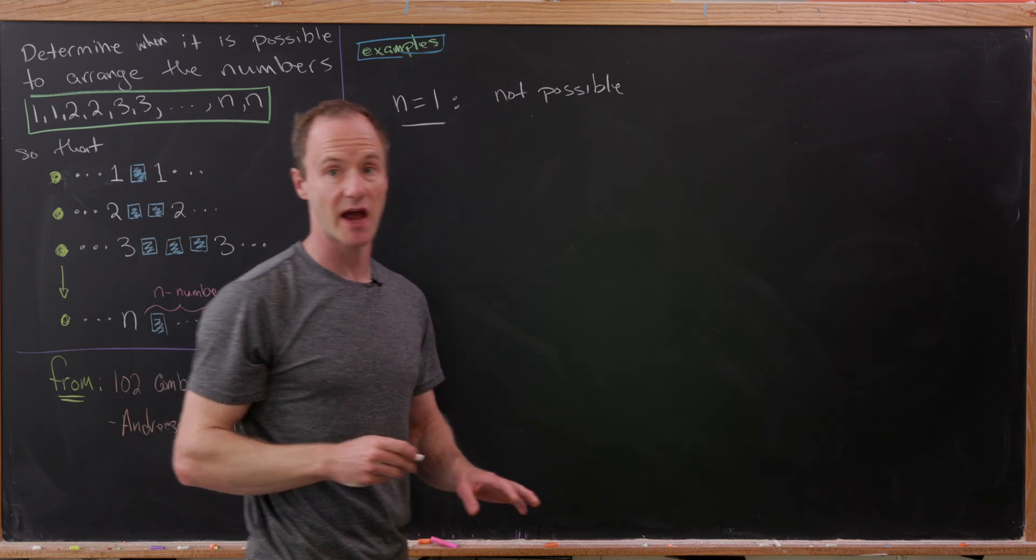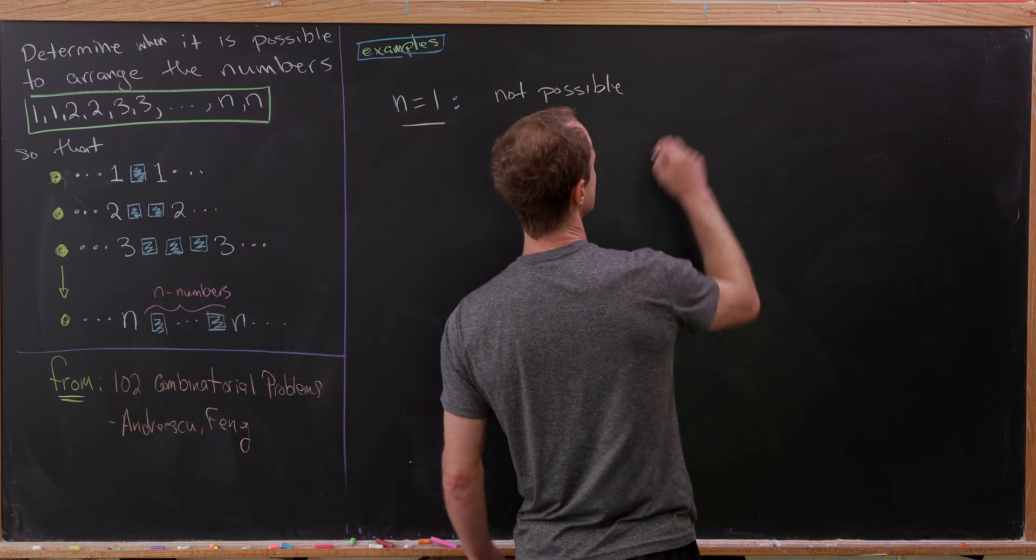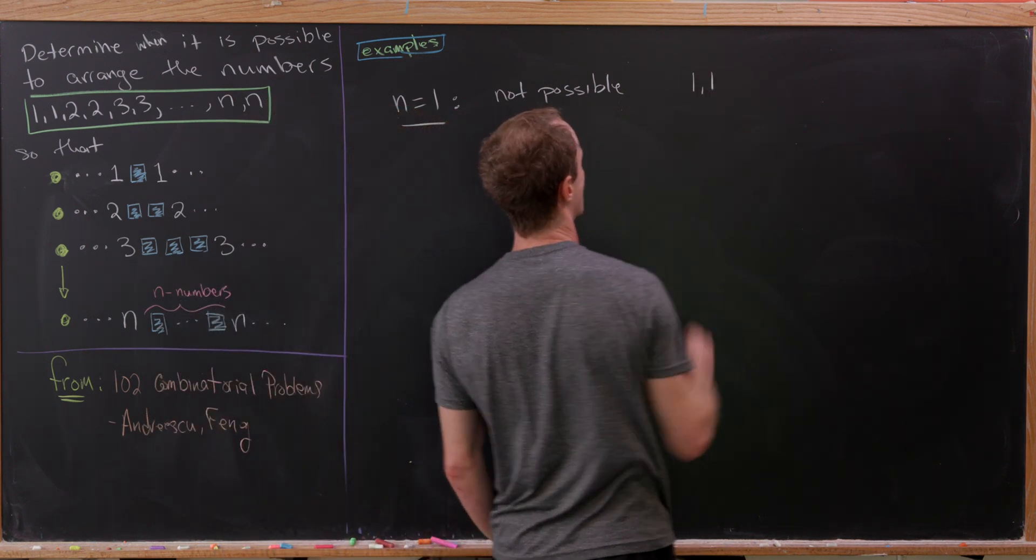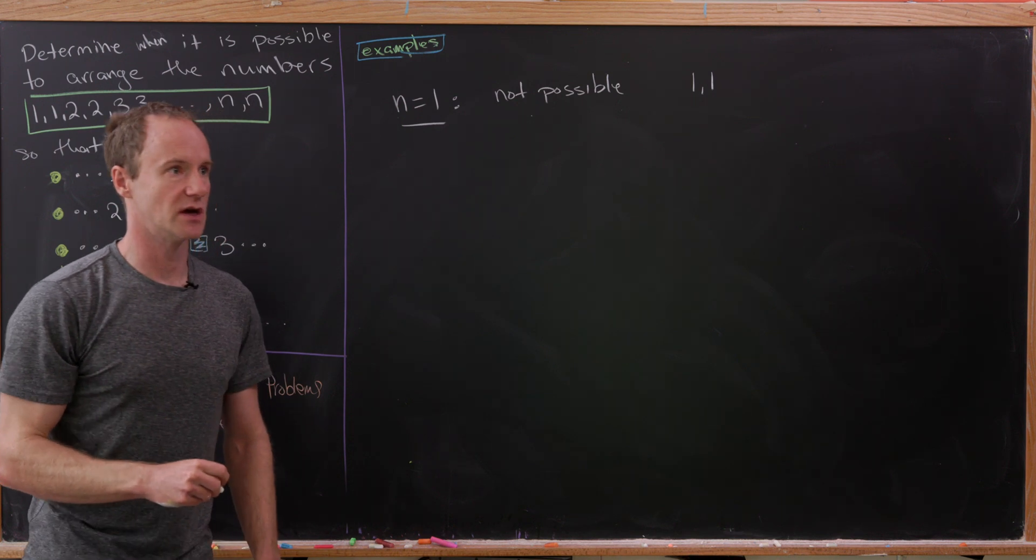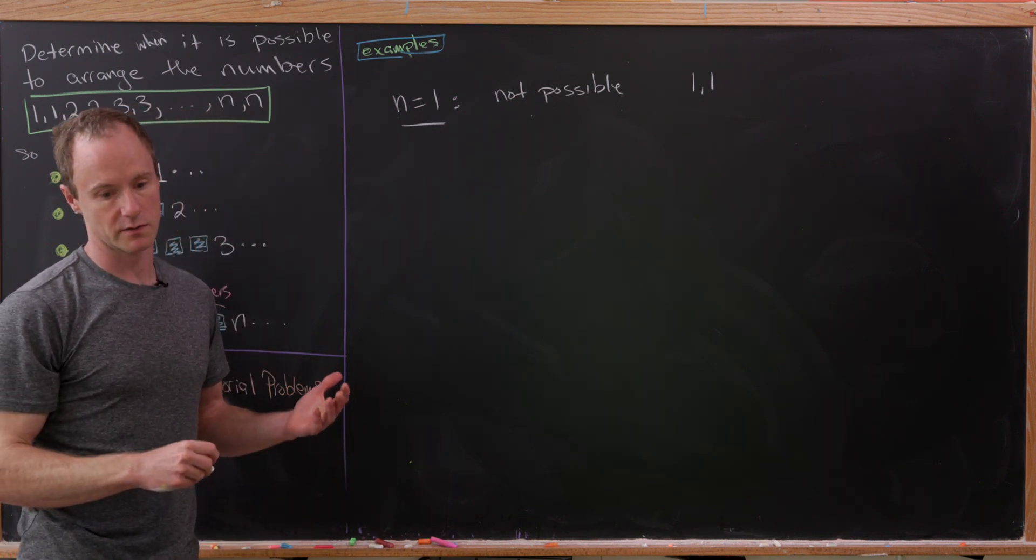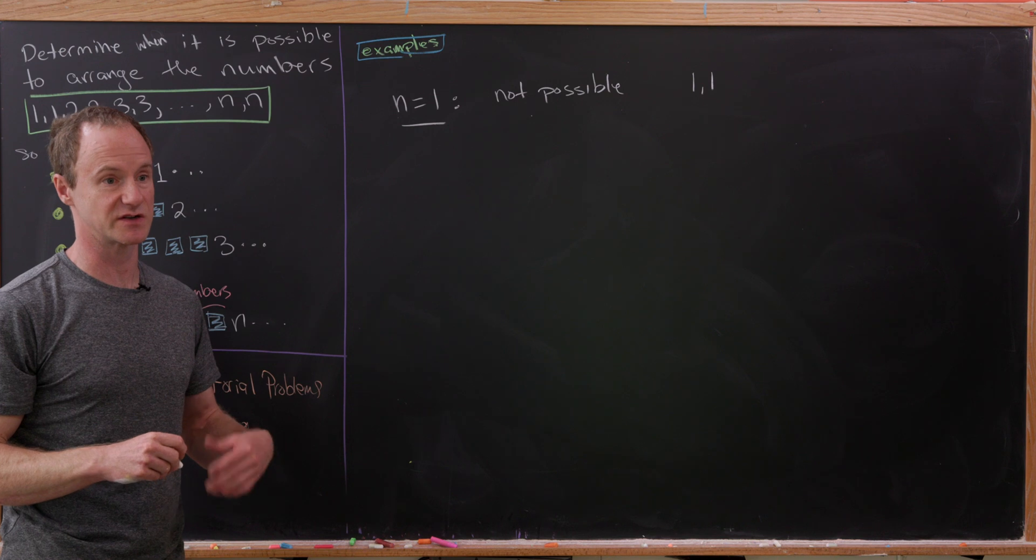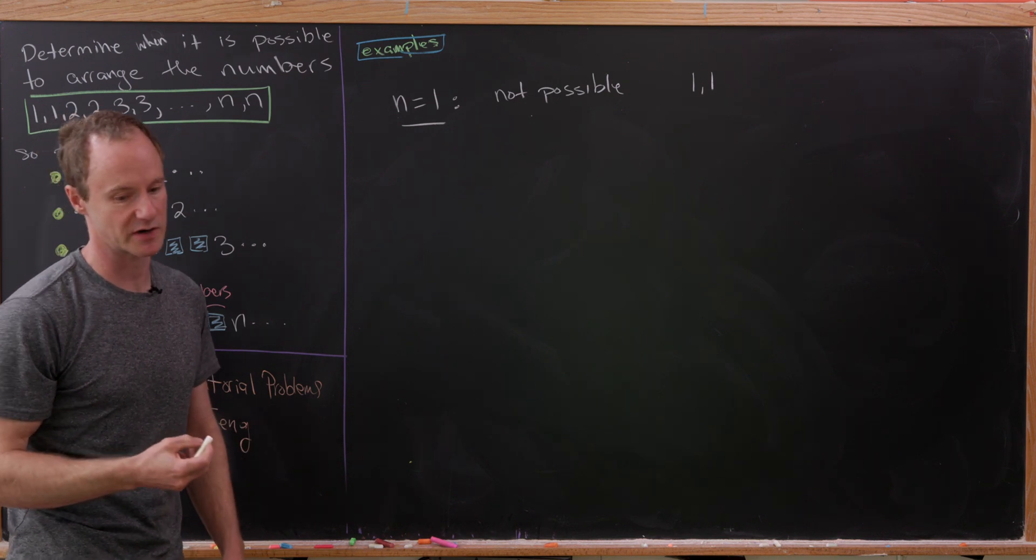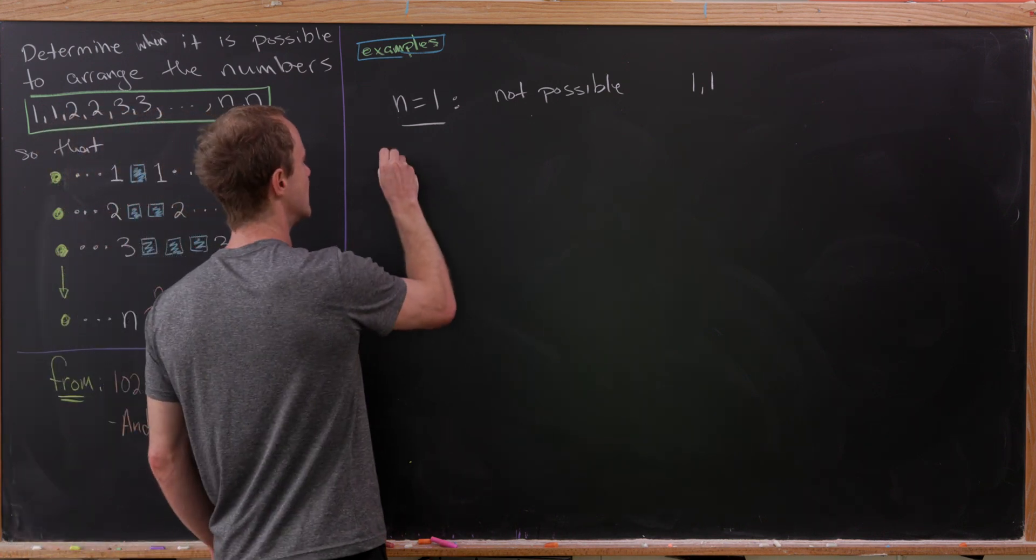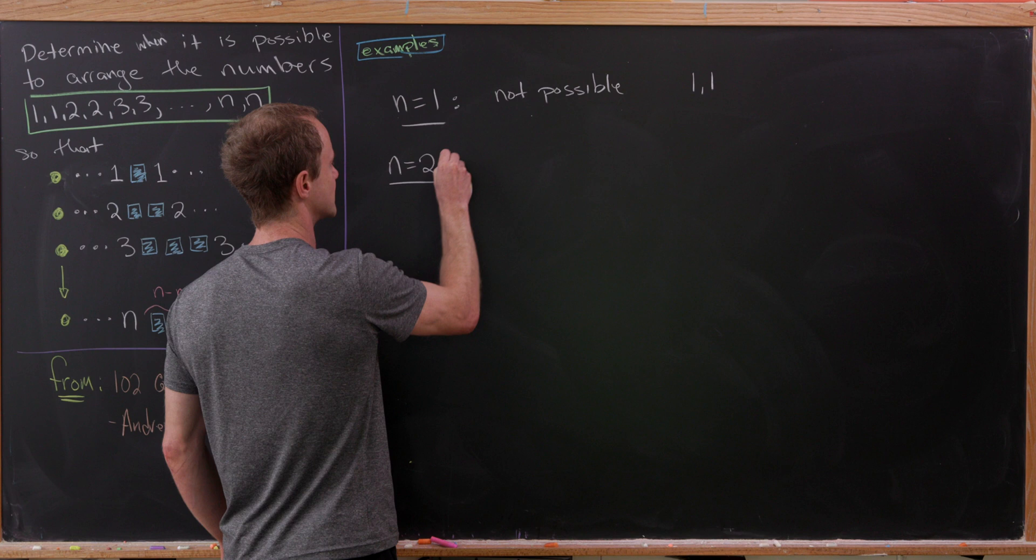If N is equal to 1, the only way to arrange the numbers 1, 1 are right next to each other. We don't have anything else to work with, but obviously there's not a number between those two appearances of 1.